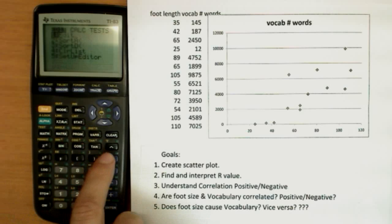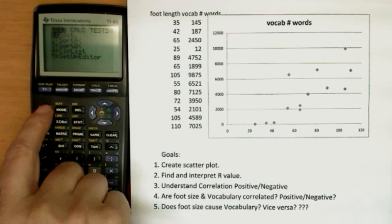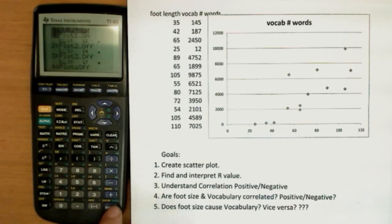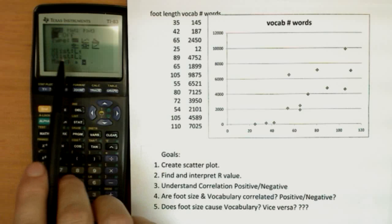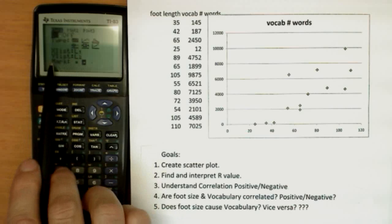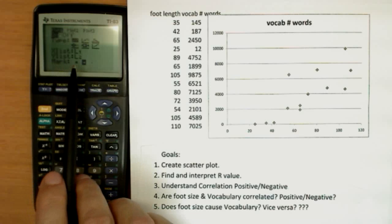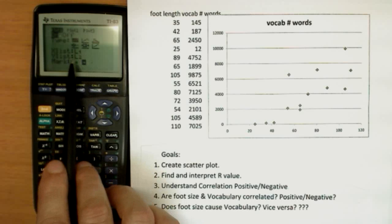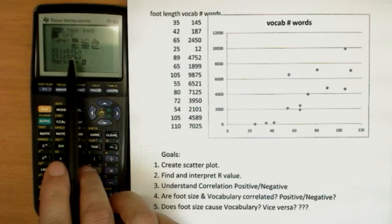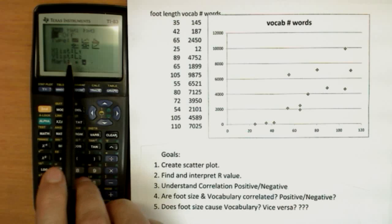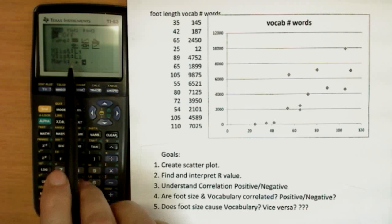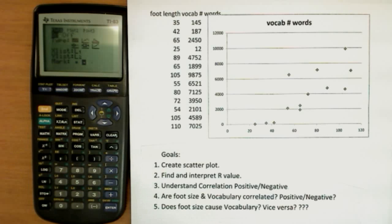Now we press stat again. Well, actually what we want to do is go to the second stat plot and go into the first one. Just hit enter. Make sure it's turned on and that the x values are coming from L1 and the y values are coming from L2. In more complicated problems, you may use other tables for your data than L1 or L2. You can use any of them you want. You just have to put the right ones in here to define your x and y values.